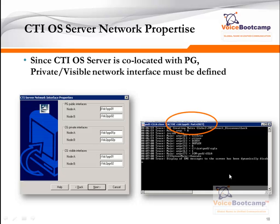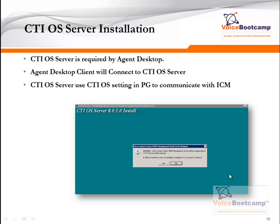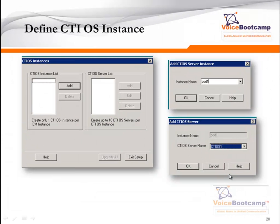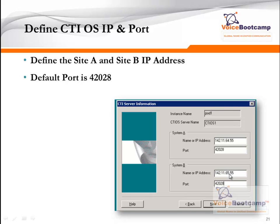When deploying the CTI OS server, define your public and private interfaces of your PG and the CG server, which is the CTI OS server. If everything is fine, you will see a process activated called CTI SVR, and it should be active if everything is configured properly. Once that is done, you're going to install CTI OS server, which is a separate application that allows the agent desktop client to log in to the ICM environment. Here you define a CTI OS instance. If you click on add and you're not able to click on the drop-down menu, simply type the instance name manually. The next step is to add a CTI OS server — the first one is going to be CTI OS 1 — and here you define site A and site B address. The default port for CTI OS server is 42028.